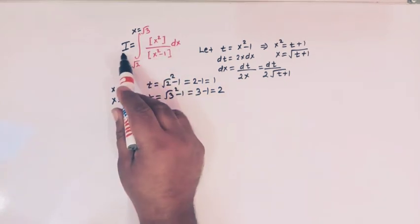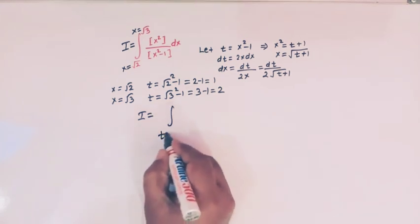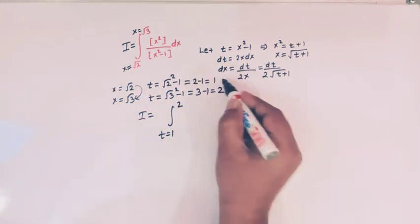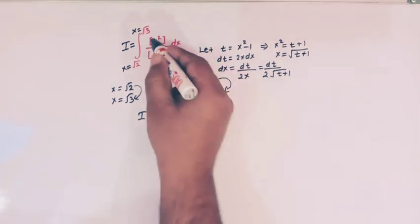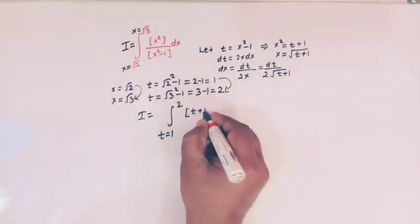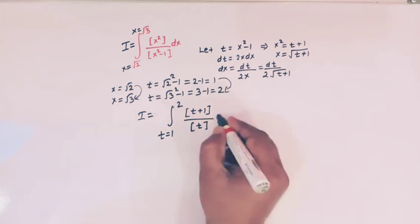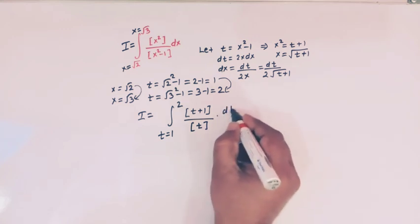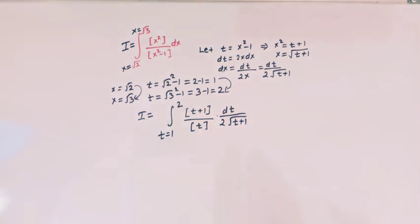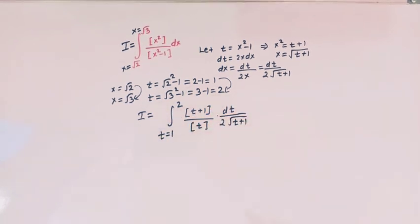So when x varies from root 2 to root 3, t varies from 1 to 2. Let us convert the integral in terms of t. In the numerator we write the greatest integer of t plus 1, in the denominator we have the greatest integer of t, and dx becomes dt over 2 times square root of t plus 1.